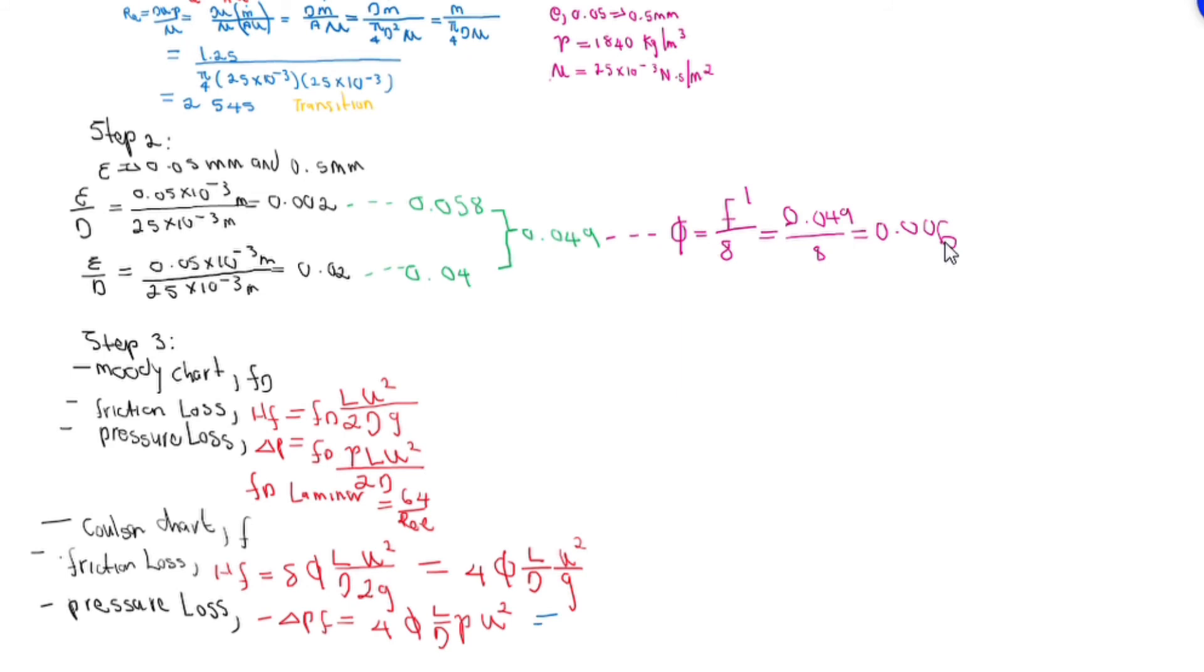Finally, we should be able to calculate our pressure loss, and we'll substitute into this equation here: 0.06, our length is 30 meters, and we have a diameter of 25 times 10 to the power of minus 3 meters, with a density of 1840, velocity which is 1.38 meters per second squared. If you punch this, I get a pressure of negative 100.918 kilopascals.